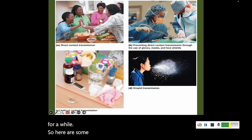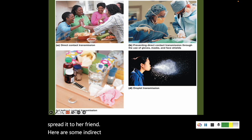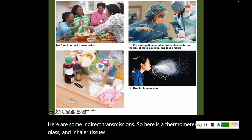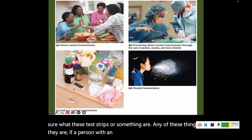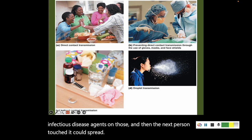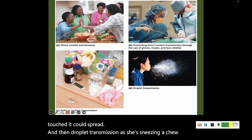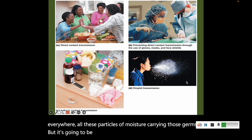Here are some examples: direct contact — if she has a staph infection on her hand and touches her friend, she just spread it. Indirect transmission examples include a thermometer, a glass, an inhaler, tissues — if a person with an infection touched these objects and got infectious agents on them, and the next person touched it, it could spread. Droplet transmission — as she's sneezing, all these particles of moisture carry germs, but gravity carries them down and out of the air.